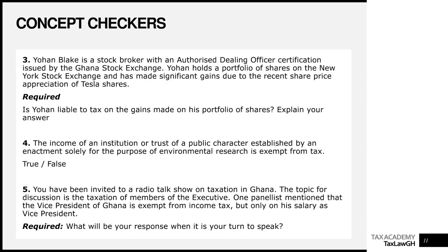The next concept checker: True or false — the income of an institution or trust of a public character established by an enactment solely for the purpose of environmental research is exempt from tax? The answer is false. The trick word here is 'environmental research.' What the law exempts is scientific research, not environmental research. So the correct answer should reference scientific research.